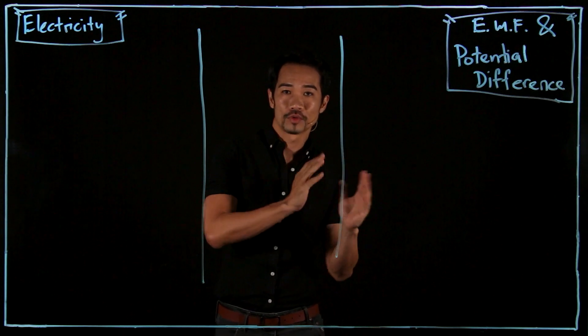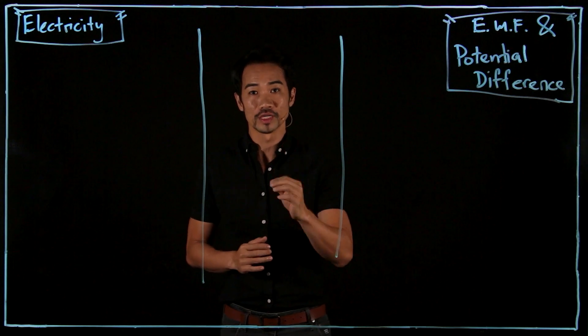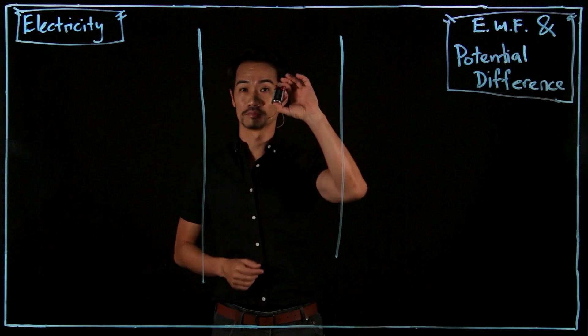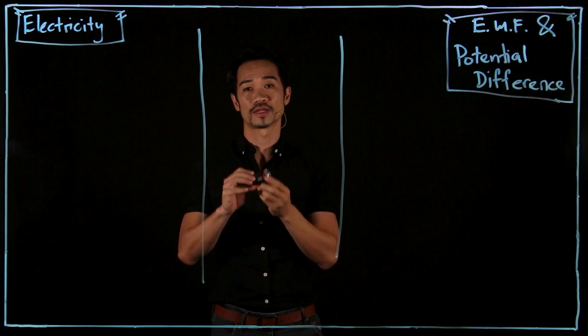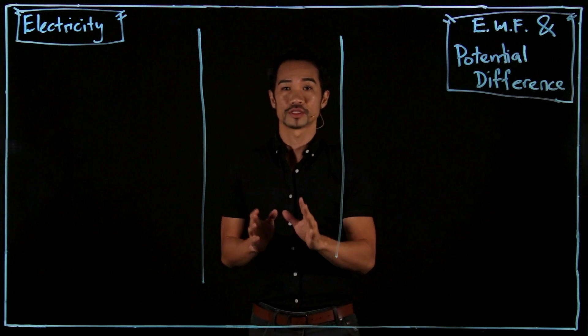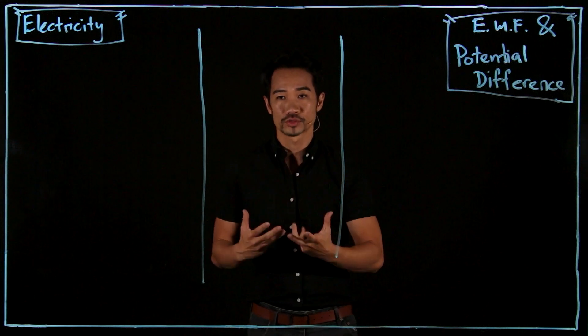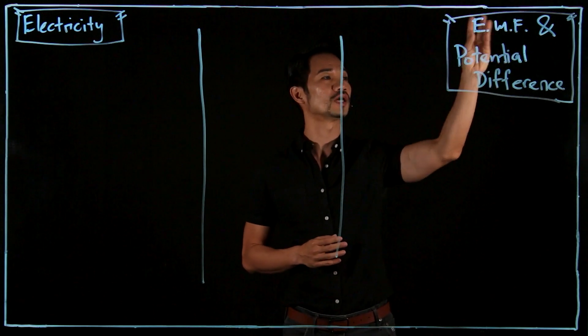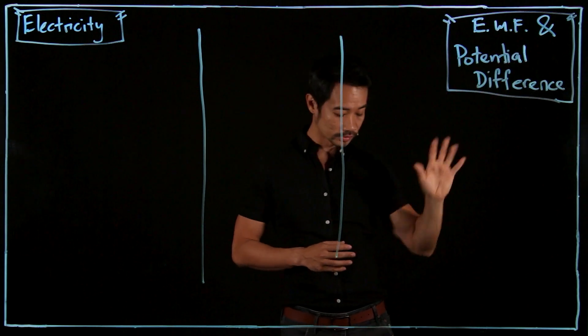Today we're going to move one more step to introduce a new term and concept which is related to the battery. Battery is actually like the energy source of things. So in electricity, we refer to electric energy with these two terms: EMF or potential difference.